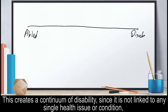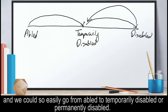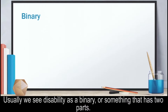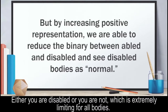This creates a continuum of disability, since it is not linked to any single health issue or condition. We could so easily go from abled to temporarily disabled or permanently disabled. Usually, we see disability as a binary or something that has two parts — either you are disabled or you are not, which is extremely limiting for all bodies.